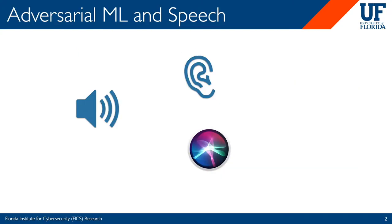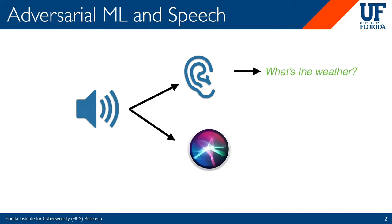Attacks against ML models, or adversarial ML, has gained a lot of traction in the past few years. The goal of the attack is to come up with inputs that the human and the ML model will interpret differently. In the case of attacks against voice systems, you start off with an audio sample. When this audio sample is given to the human, they hear the benign command 'what's the weather,' but when given to the voice assistant — in this case Siri — it outputs the malicious command 'unlock the door.' This is an example of a targeted attack where the attacker wants to force the voice assistant to output a target transcription.